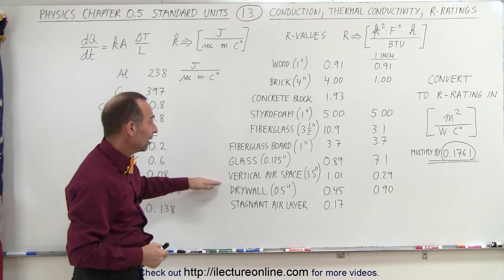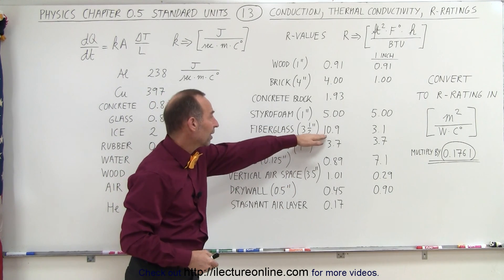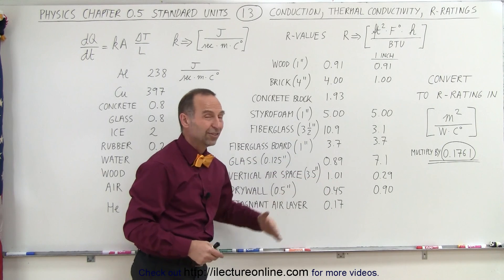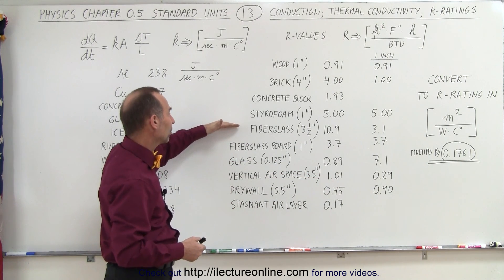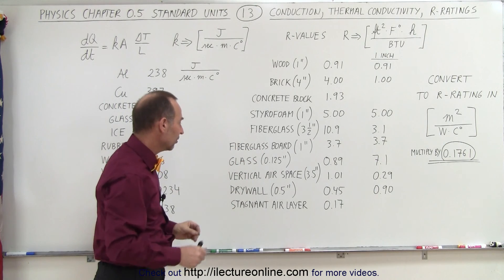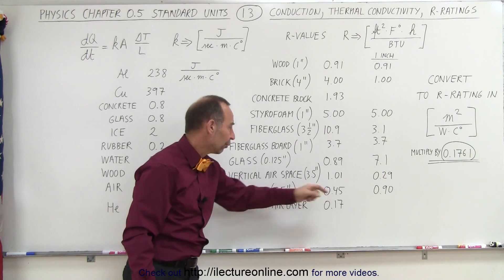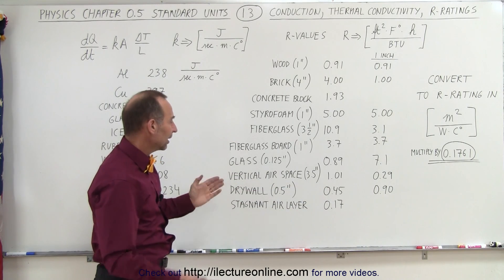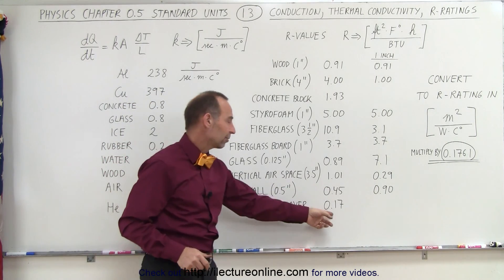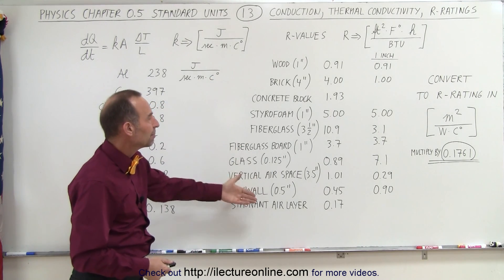Vertical airspace—if you use air instead of fiberglass—notice you're bringing it down from 10.9 down to 1.0. You can see it's much better to insulate the house with fiberglass than to just rely on the airspace between the inside and outside walls. Drywall adds about 0.45, and stagnant air layers on either side of the wall also add some additional insulating capability. That's what we mean by R ratings.